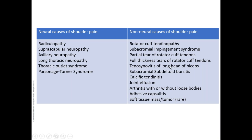Regarding tenosynovitis of the long head of biceps tendon — tenosynovitis can only occur in tendons that have a tenosynovium. For example, the distal biceps tendon does not have a tenosynovium, so you'll never see tenosynovitis there; fluid around it is most likely bursa. The supraspinatus tendon at its insertion also doesn't have a tenosynovial sheath, so you don't get tenosynovitis of supraspinatus or infraspinatus. The long head of biceps tendon does have a tenosynovium, so that can get inflamed.